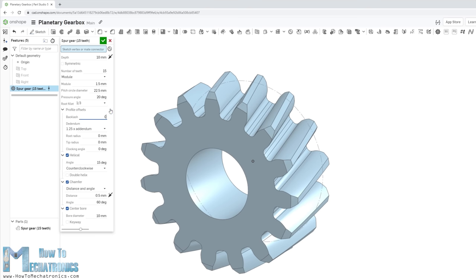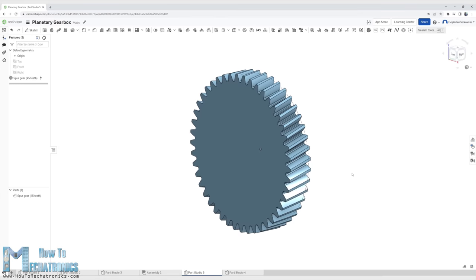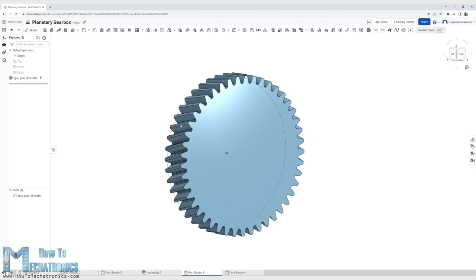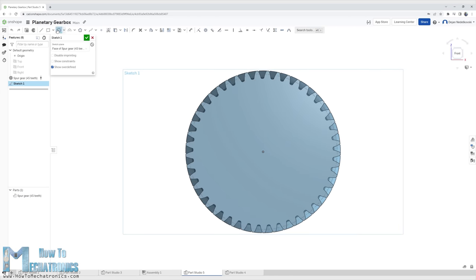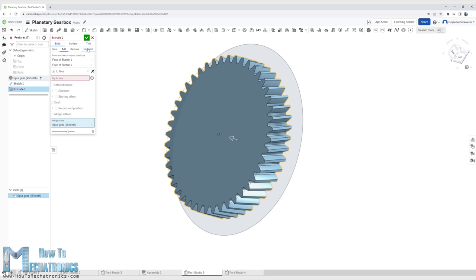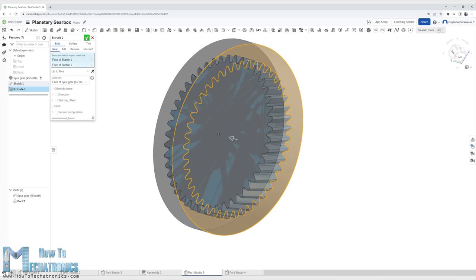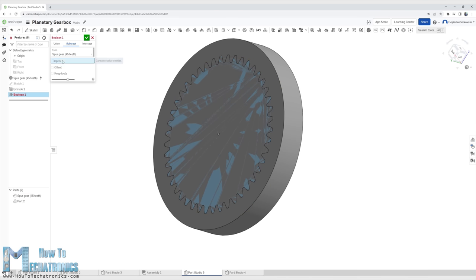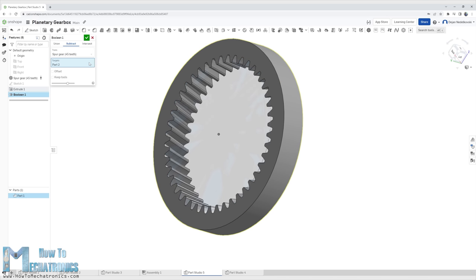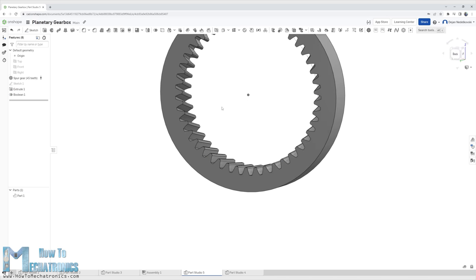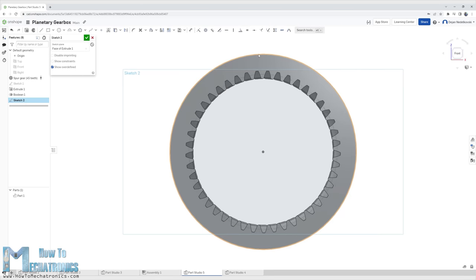As for the ring gear, which has internal teeth, first I generated a normal gear with 45 teeth. Then I drew a circle with a desired diameter, I extruded it within the gear itself and then using the boolean function I subtracted the gear from the extrusion and so I was left with an internally toothed gear.